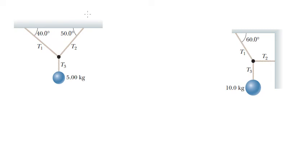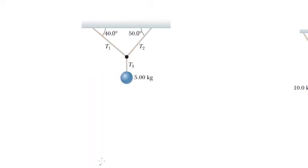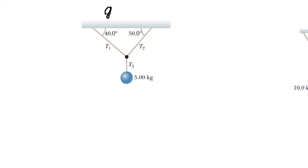Hello everybody. Today I will talk about physics. The topic is about tensions. I will show you how to find T1, T2, and T3 for figure number one, with g equals 9.8 meters per second squared.